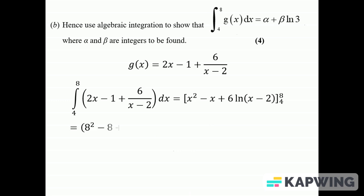So when I put 8 in, I'll have 8² - 8 + 6 ln(8 - 2), and I'll subtract what I get when I put 4 in, which is 4² - 4 + 6 ln(4 - 2).